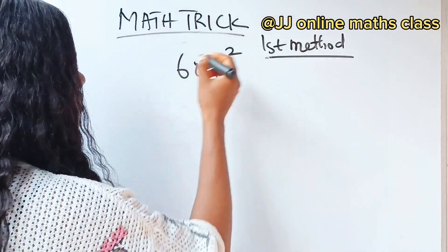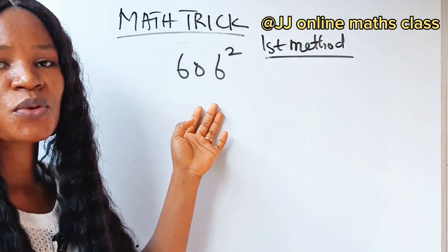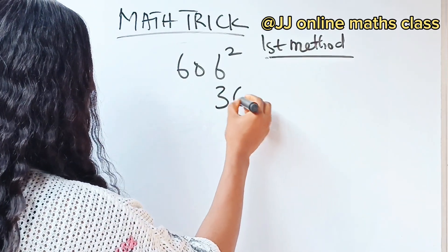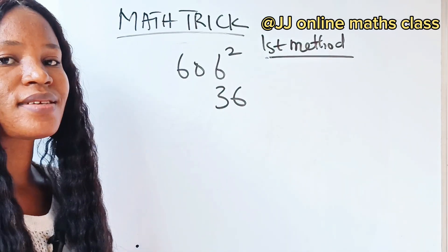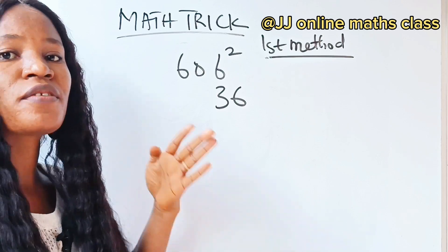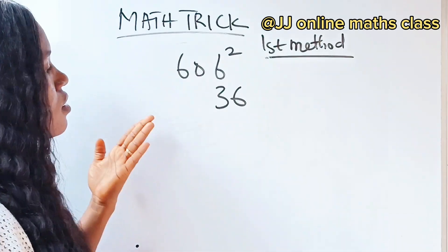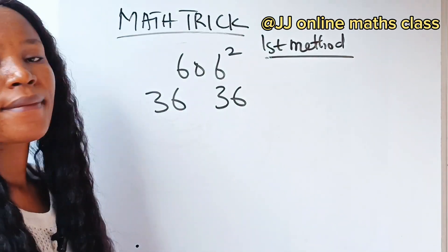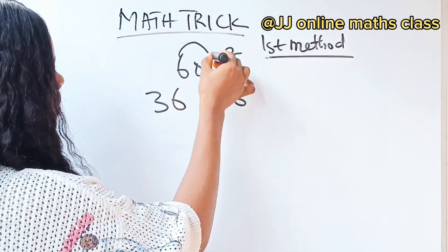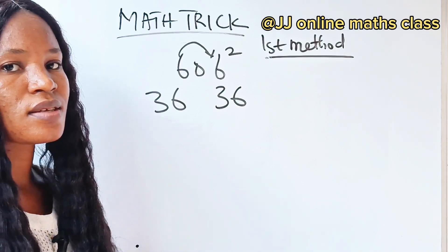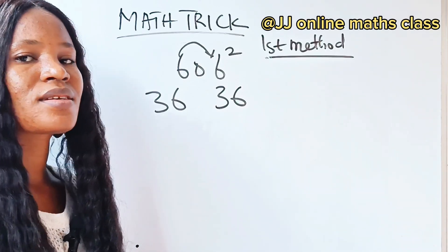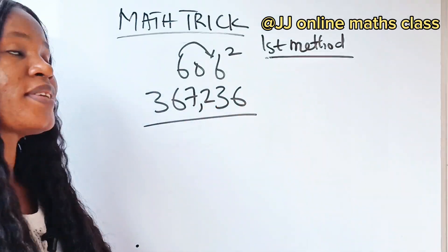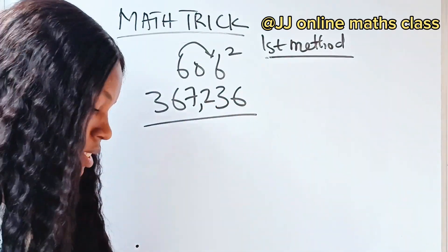Let's solve another one for those who may still not understand. We are asked to square 606. Six squared is 36 — write your 36. Zero squared is zero — neglect that, but leave space in the middle. Six squared is 36 — write your 36. Now multiply: six times six gives us 36, and double of 36 is 72. Fill it in — this is your solution. As easy as A, B, C.